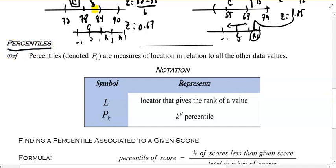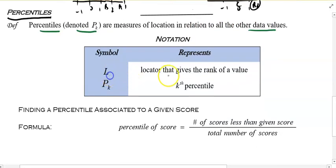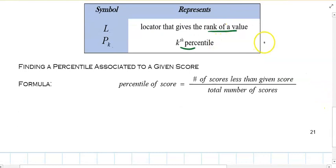Percentiles, that's a different story. So z-score, we're going to come back to heavily. We're going to take a detour really quick and get into percentiles. Percentiles are really percentages. The definition, percentiles, denoted by P sub K, are measures of location relative to all the other data values. Percentiles, L is the locator that gives the rank of a value, and P sub K is the Kth percentile. Percentile is nothing more than a percent.